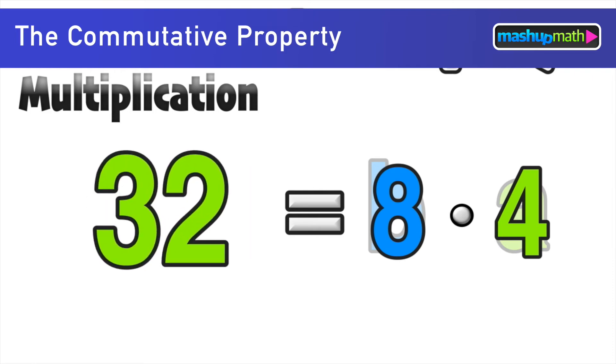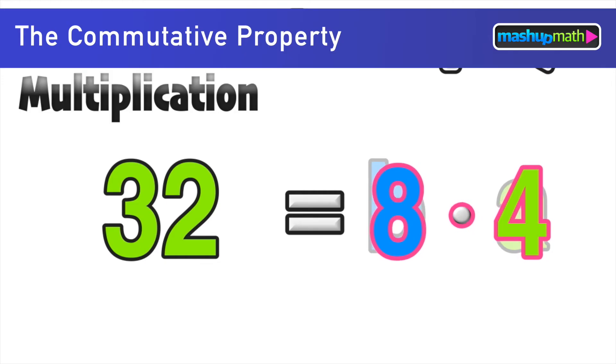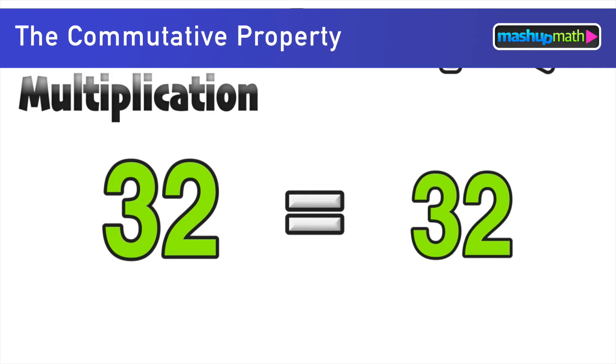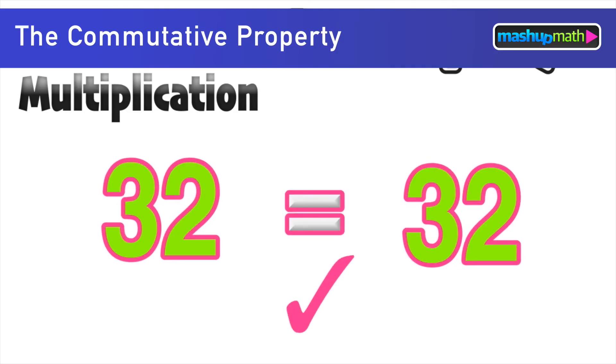Four times eight on the left side equals 32. And on the right side of the equal sign eight times four, the reverse, is also equal to 32. We know that 32 is equal to itself. So this example could help us to understand why multiplication is commutative.